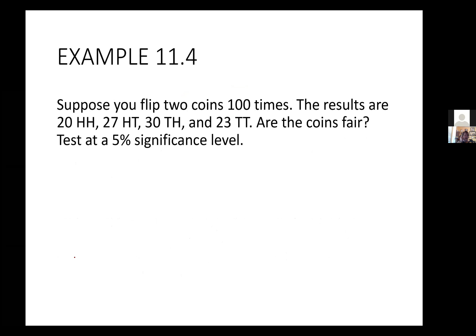Let's do one last goodness of fit example, and then we'll move to independence. Suppose you flip two coins 100 times. The results are: 20 where you get both heads, 27 where you get head-tail, 30 where you get tail-head, and 23 are tail-tail. Are the coins fair? Test at a 5% significance level.